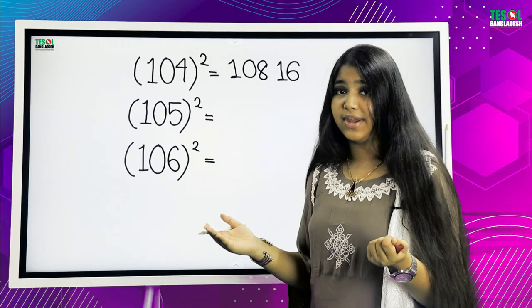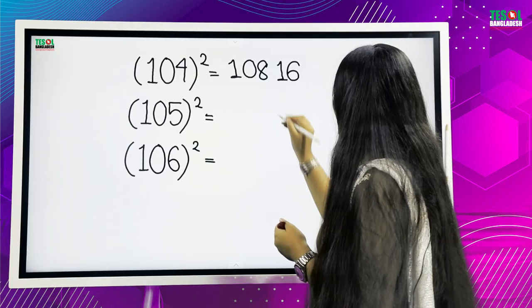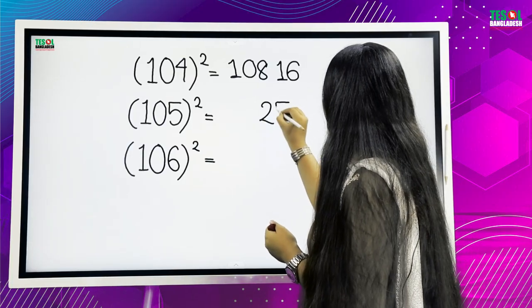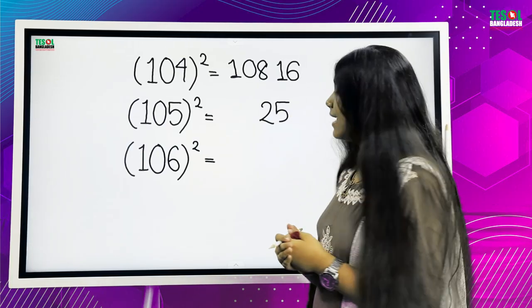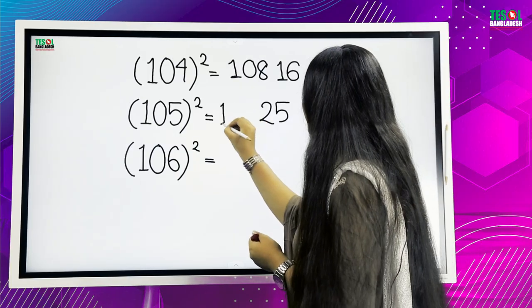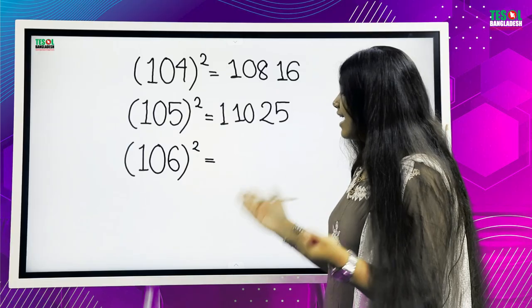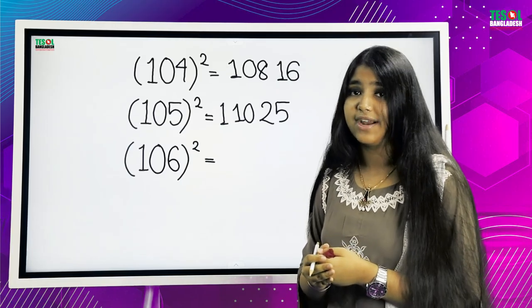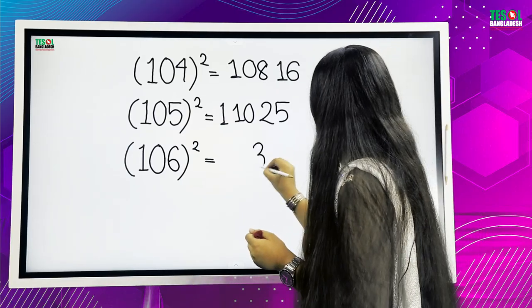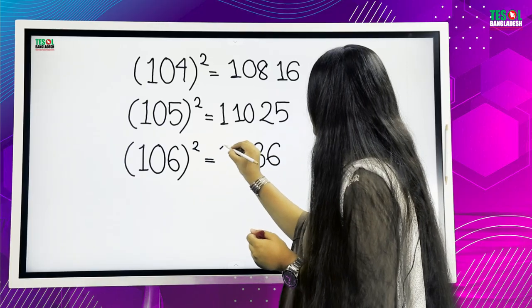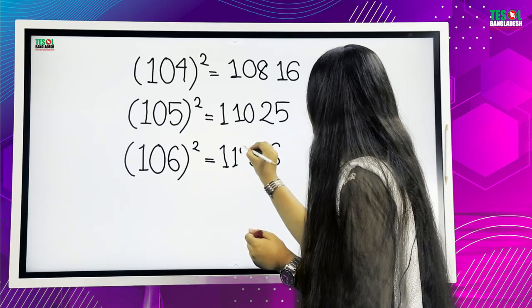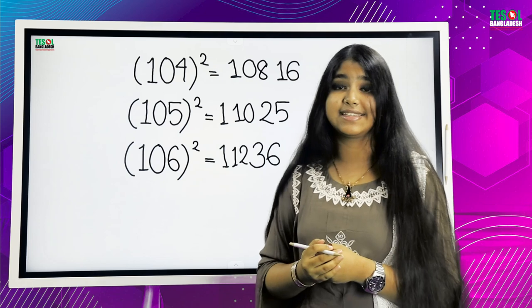105 squared. 5 times 5 is 25. And we will add 5 with 105. That means 110, 25. See, it's easy. And the last one, 106 squared. 6 times 6 is 36. And 106 plus 6 equals 112. So, 112, 36 is the answer. The rest are for you.